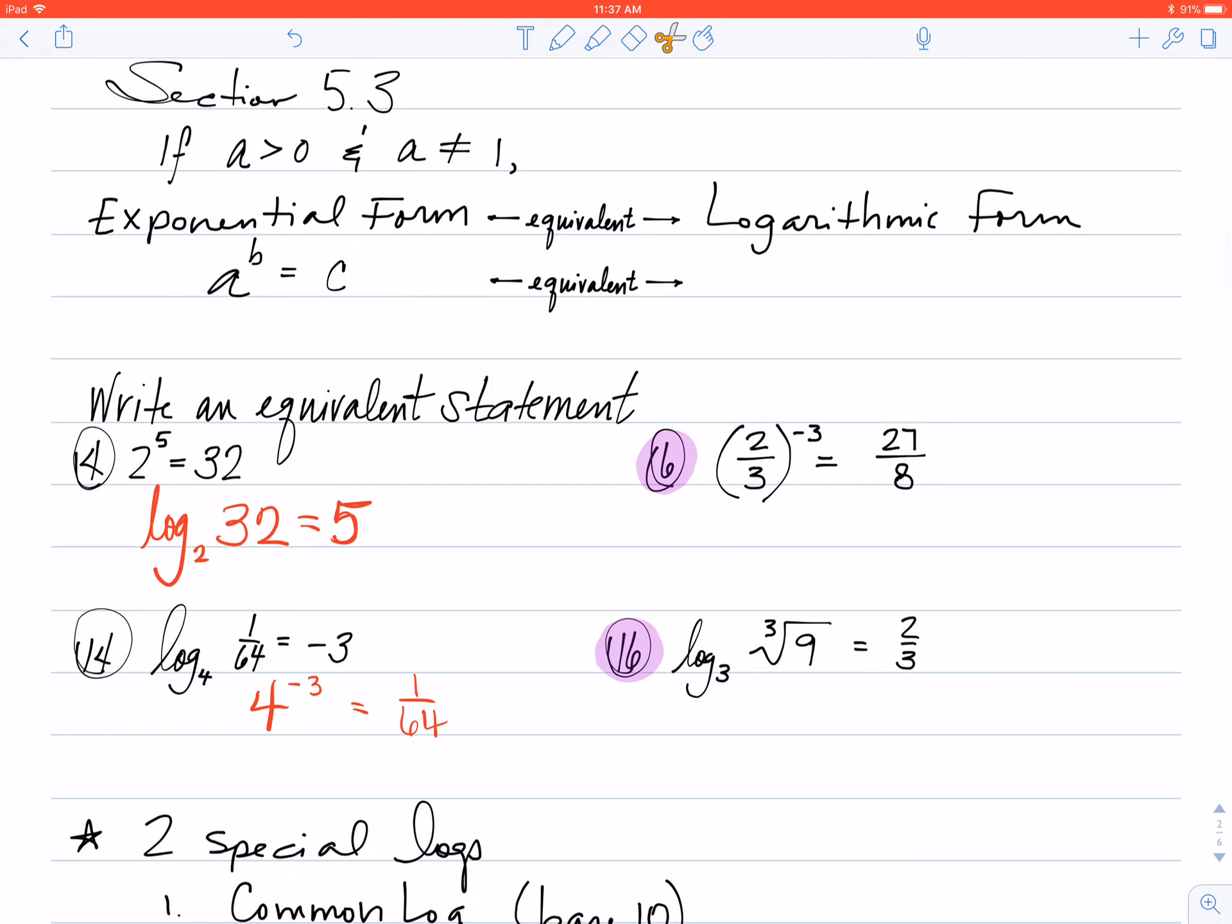What I'd like to show you is that exponentials, which is what you've been working on in sections 5.1 and 5.2, are undone by logarithms. The undo button of exponentials is logarithms, and the undo button of the logarithm is the exponential.